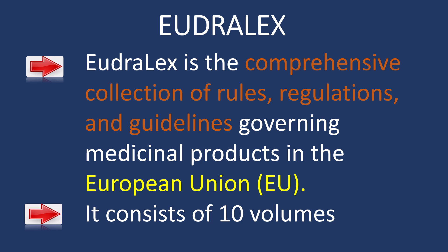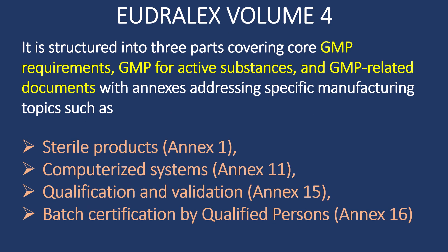EudraLex consists of 10 volumes. EudraLex Volume 4 is structured into three parts covering core GMP requirements, GMP for active substances and GMP related documents, with annexes addressing specific manufacturing topics such as sterile products in Annex 1, computerized systems in Annex 11, qualification and validation in Annex 15, and batch certification by qualified persons in Annex 16.